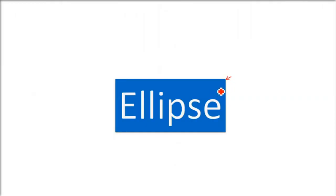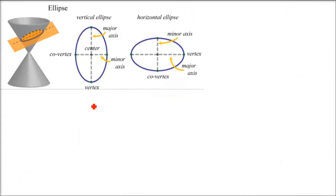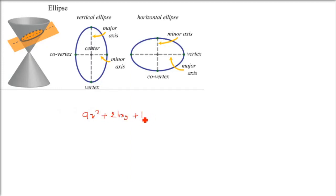We are looking at Ellipse today. Ellipse is a conic section. We have already discussed conic sections, but we will elaborate more. Ellipse, Parabola, and Hyperbola are all conic sections formed by having a cone cut by a plane. Different figures are formed because of this cone, and they are known as conic sections. The general conic section equation is: ax² + 2hxy + by² + 2gx + 2fy + c = 0. This equation is for every conic section.